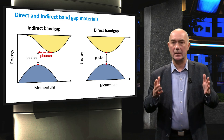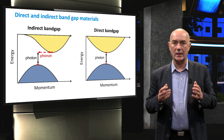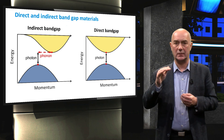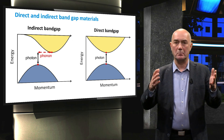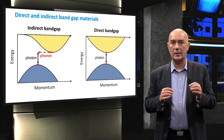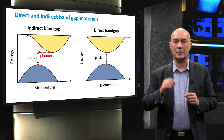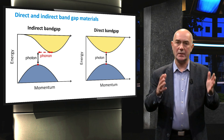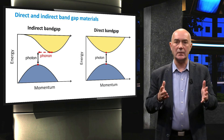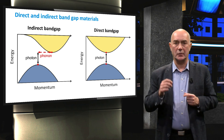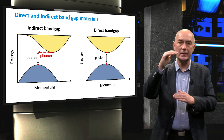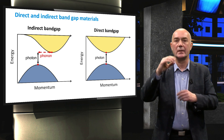For direct band gap materials, no additional momentum matching coming from phonons is required. As such, the absorption for direct band gap materials is significantly higher than for indirect band gap materials. For example, the important PV materials are silicon and gallium arsenide. Silicon is an indirect band gap material, whereas gallium arsenide is a direct band gap material. As we will discuss later in this course, for the same thickness of material, gallium arsenide will absorb more light in the visible spectrum than silicon will do.